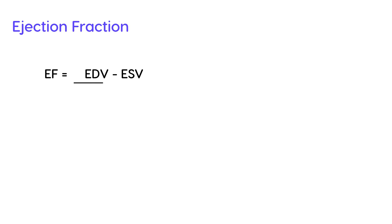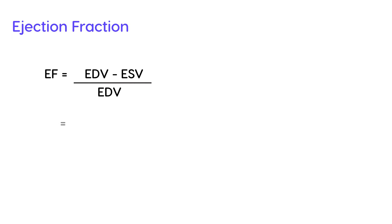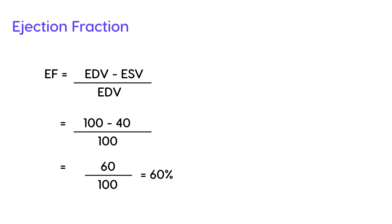In congestive heart failure, you calculate something called the ejection fraction, which tells you if a person has CHF or not. It is calculated as: (end diastolic volume minus end systolic volume) divided by end diastolic volume. Using our example: 100 minus 40 over 100 equals 60 over 100, which is 60%. The normal ejection fraction is between 55 to 65%, so this patient does not have CHF.